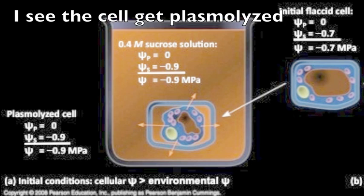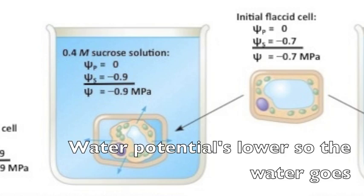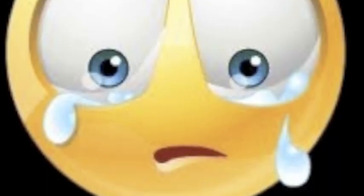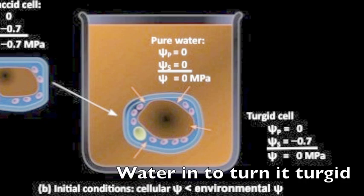I see the cell get plasmolyzed, solutes lower in cells inside, water potential's lower so the water goes. Cytoplasm's lost, cell is gone. A flaccid cell, potential's low to gain water into turgid, target gained. Potassium causes guard cell opening when it goes in, the water potential's low to gain.